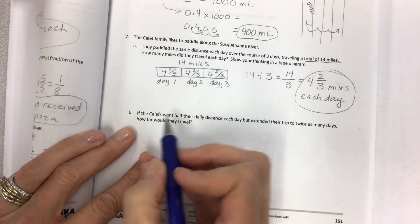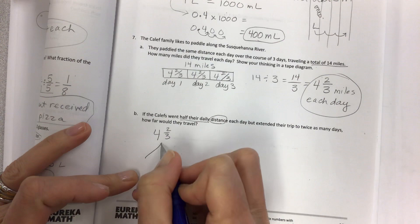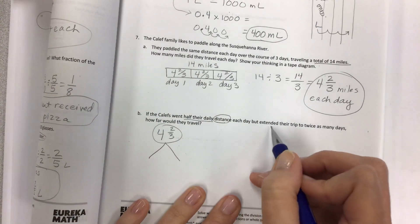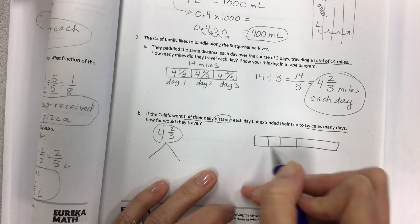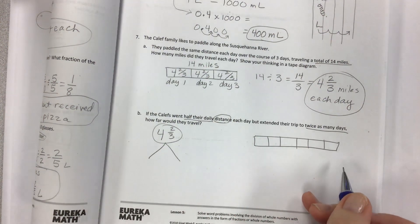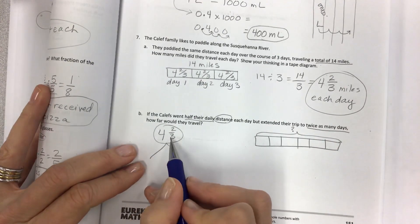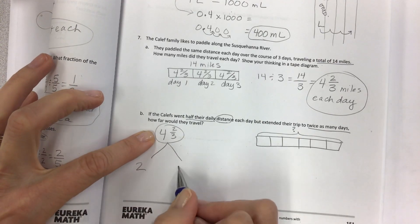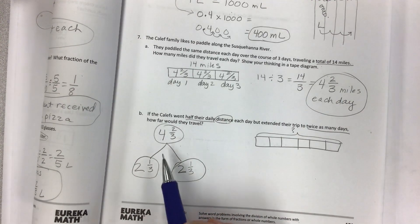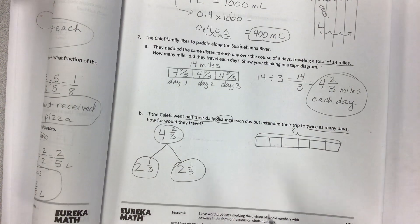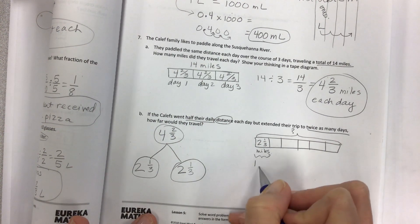But there's more. Last one. If the Califfs went half their daily distance, so half of 4 and 2/3, you can make a number bond there. But extended their trip to twice as many days. Well, that makes a new tape diagram. Three days here and three days here for a total of six days. How far would they travel? So the number of miles is now the question. So what if I break this in half? Half of 4 is 2, and half of 2 is 1. So 2 and a third. 2 and a third. And that would be 4 and 2/3. And so now I know that 2 and 1/3 miles is the one day amount.